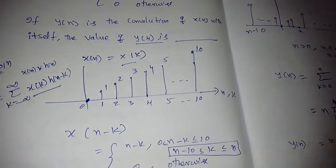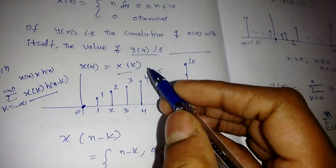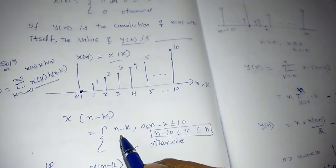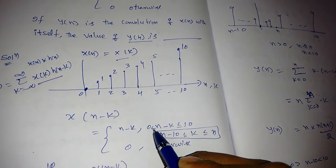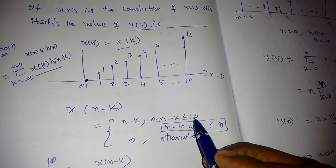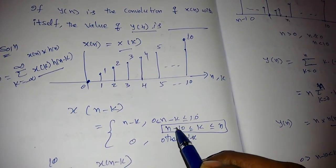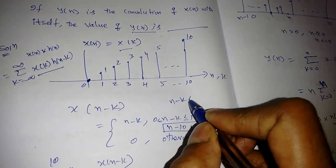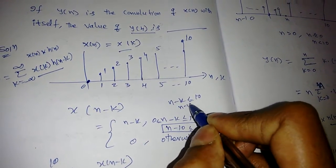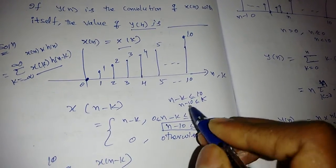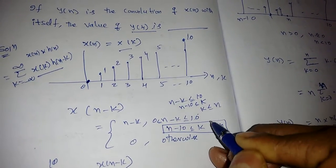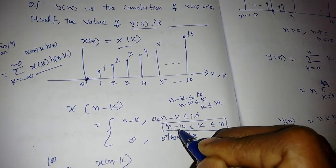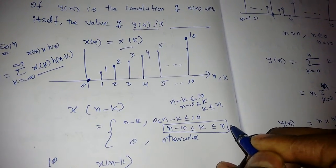To find x[n-k], in x[n] we substitute n-k in place of n. The limits also change: n-k between 0 and 10 gives us two limits — n minus 10 ≤ k ≤ n. So the limits become n-10 ≤ k ≤ n.